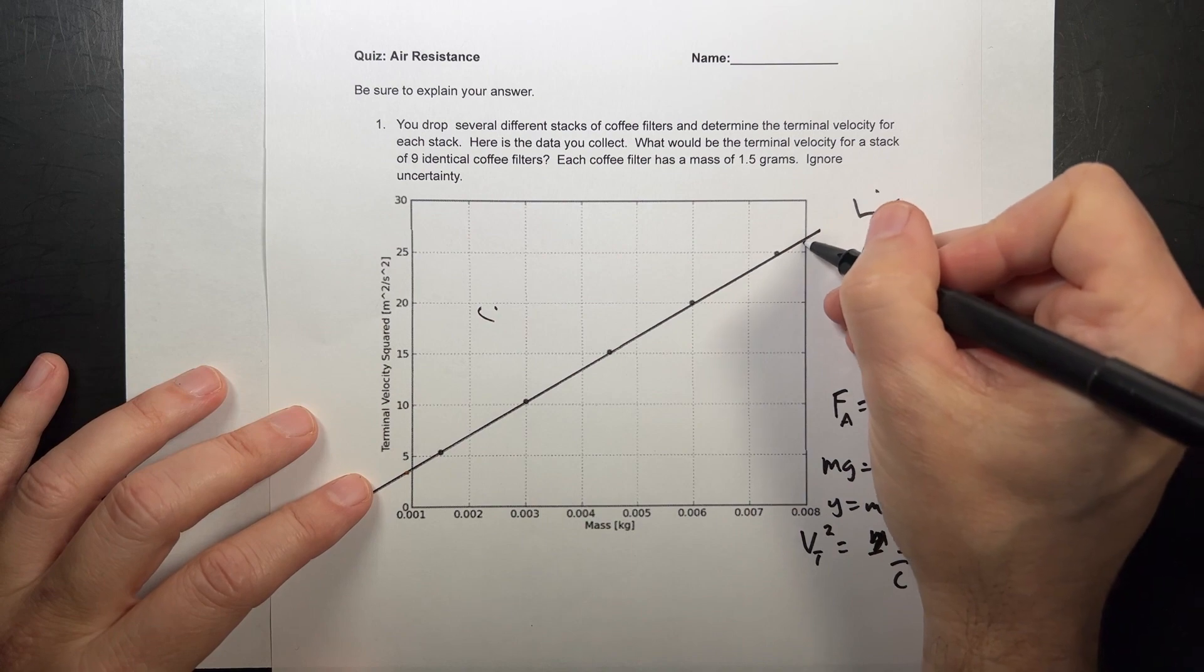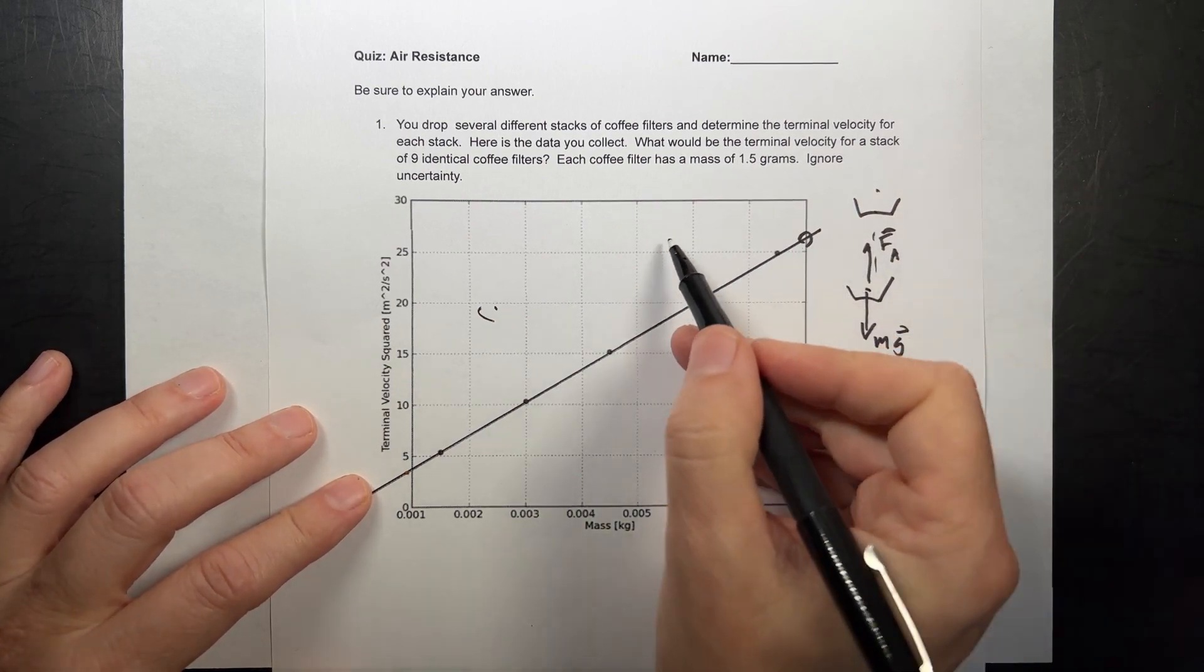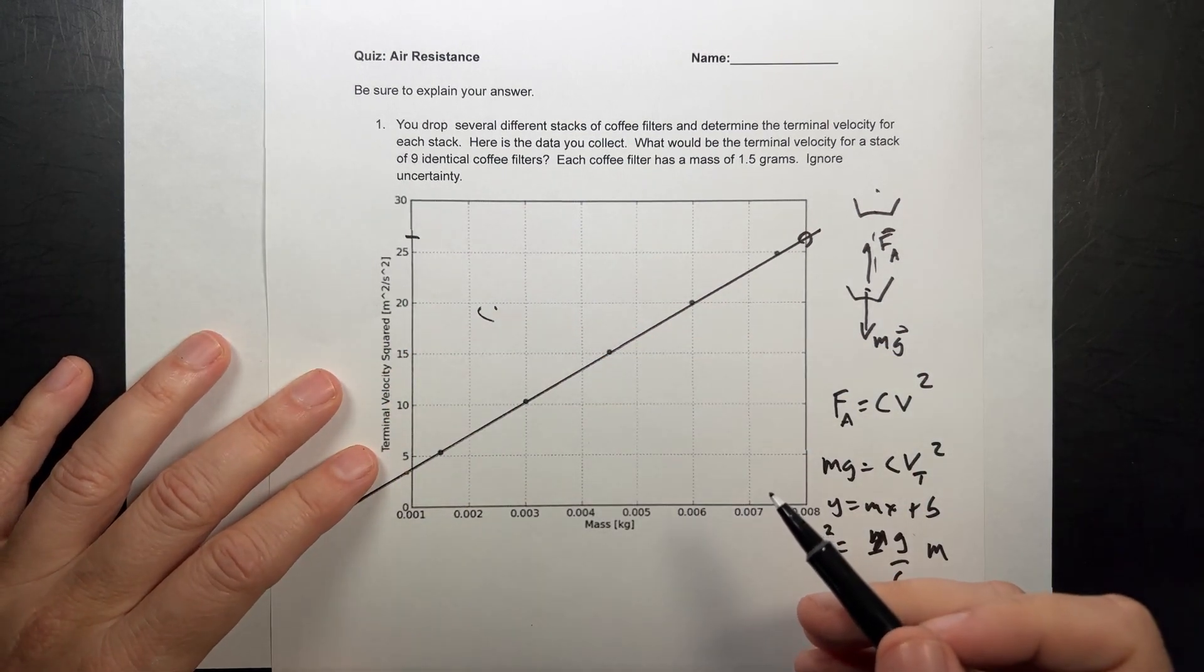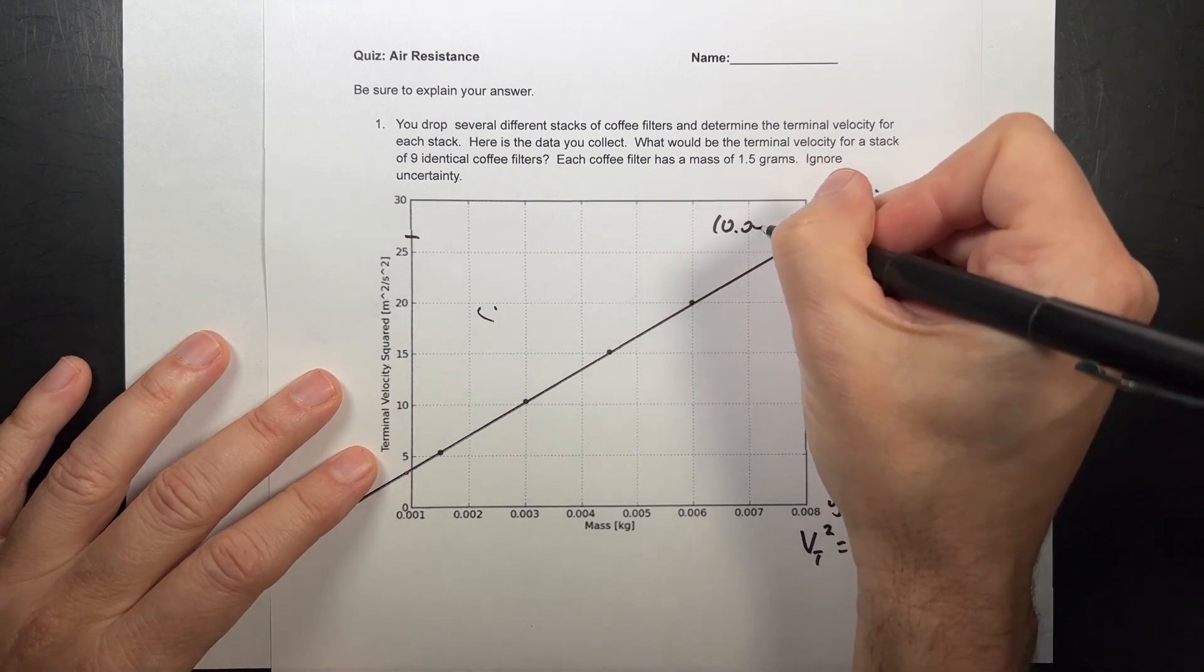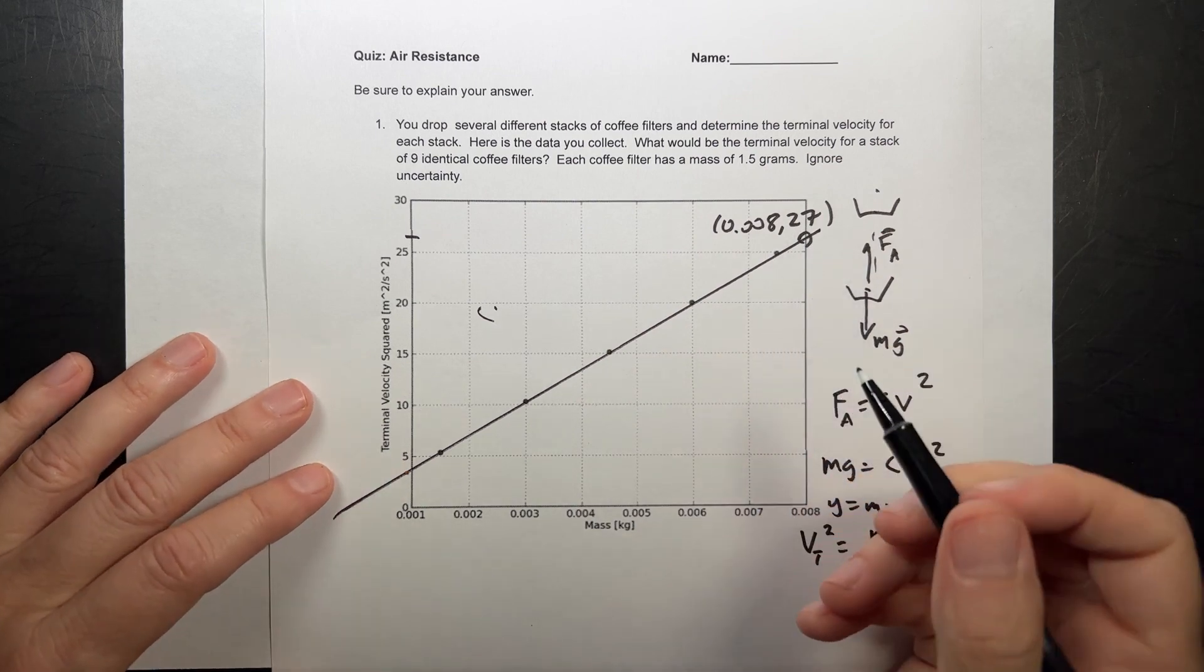So let's just pick this right here, because that one I know is the mass of 0.008, and that's going to have, let's say that is 27. So this is going to be 0.008, 27, and I'm just guessing. I mean, it's not perfect, and that's fine.